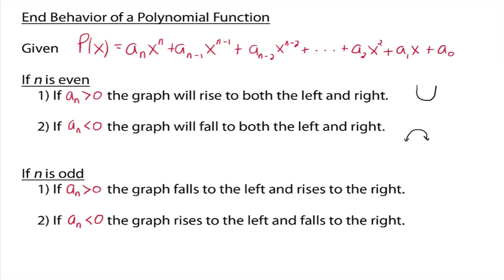If n is odd — think x cubed, x to the 5th, x to the 17th — and the leading coefficient is positive, then the graph falls to the left and rises to the right, just like x cubed. And if the leading coefficient is negative, that's the reflection over the x-axis, so it rises to the left and falls to the right. If you keep x cubed in mind, you can figure out the end behavior for any odd degree polynomial.